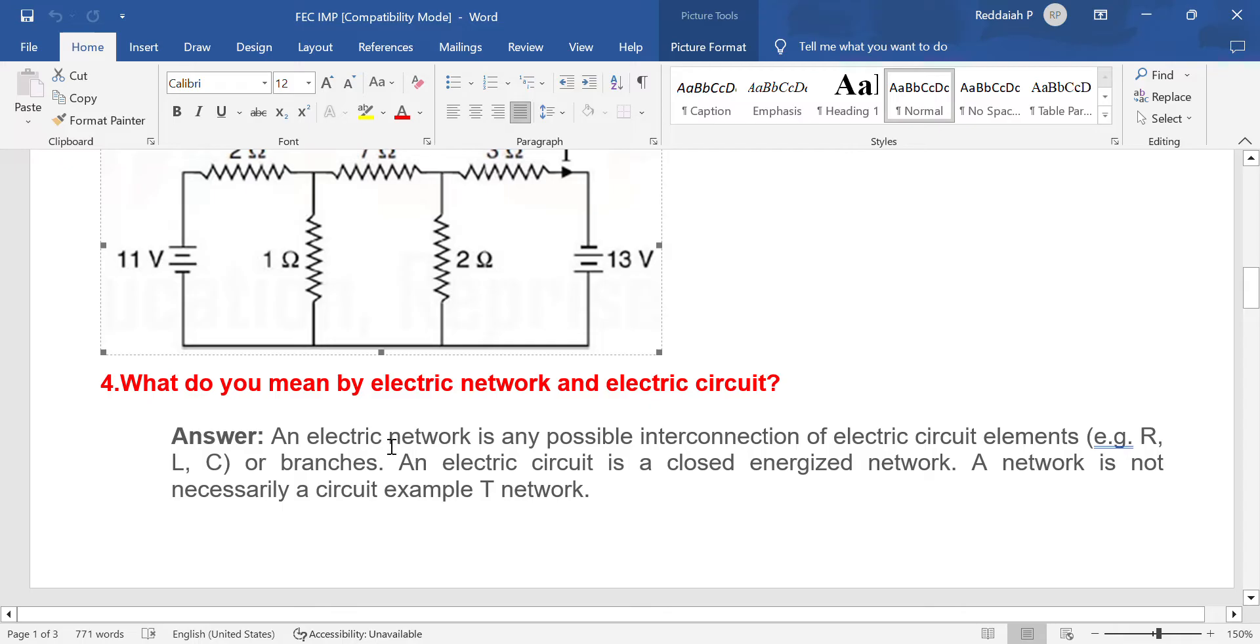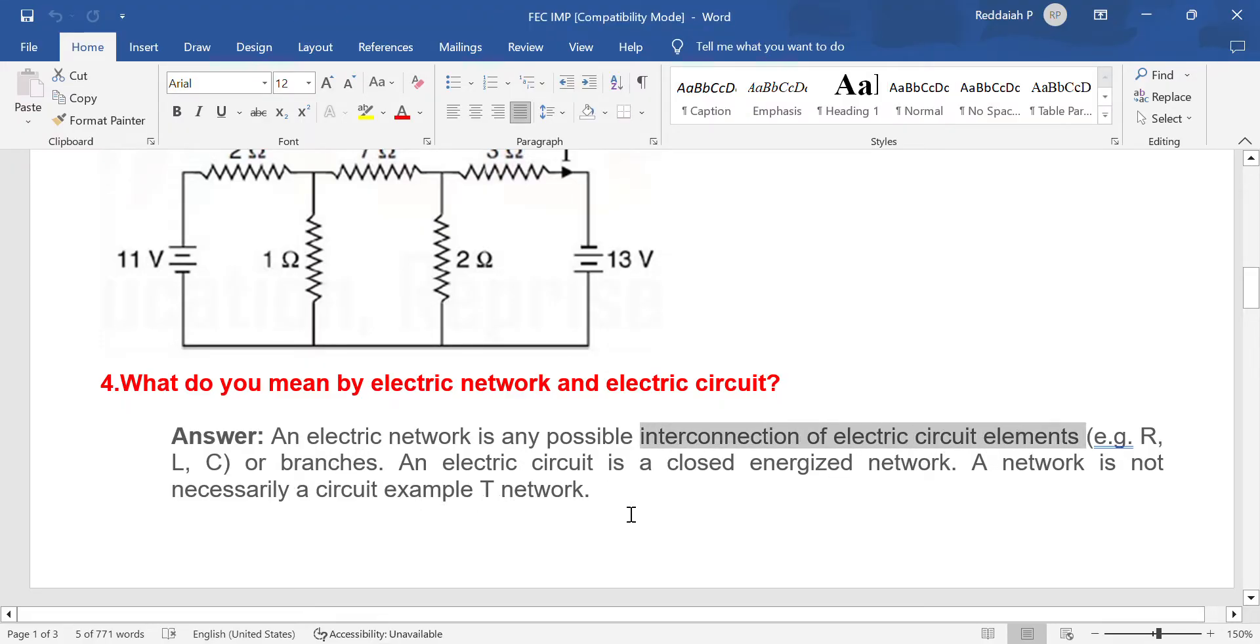What do you mean by electric network and electric circuit? Two marks question. Network is the interconnection of various elements - resistance, inductance, and capacitance. The interconnection of the network is not necessarily a circuit.